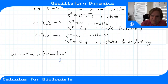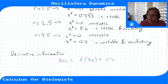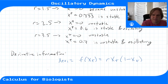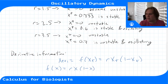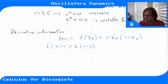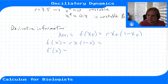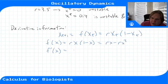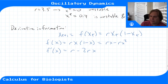Now let's see what the derivative tells us. Our function is f(x) = r·x·(1 - x). Expanding gives r·x - r·x², so the derivative is f'(x) = r - 2r·x.